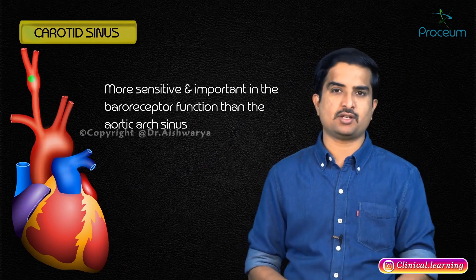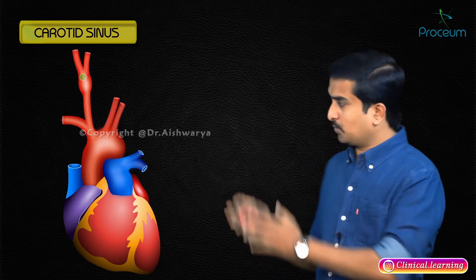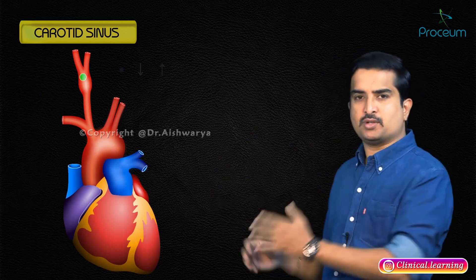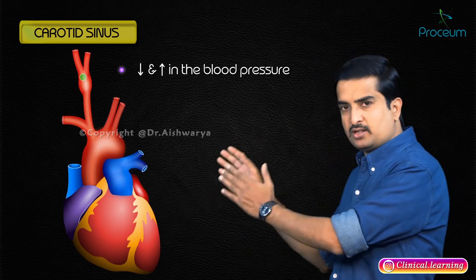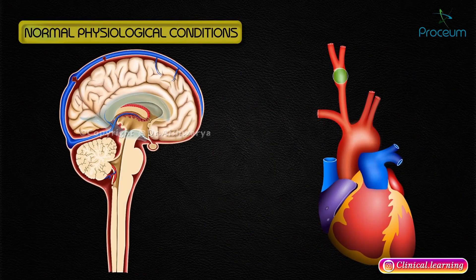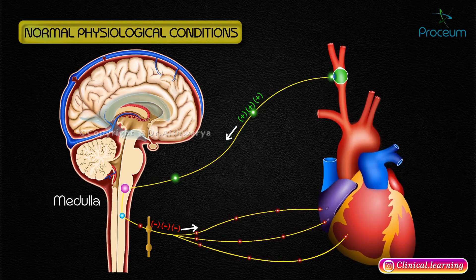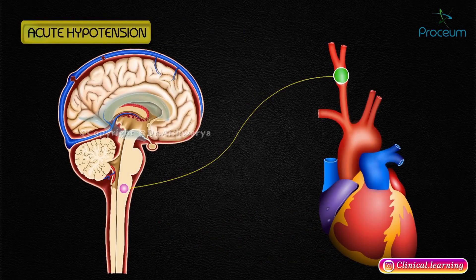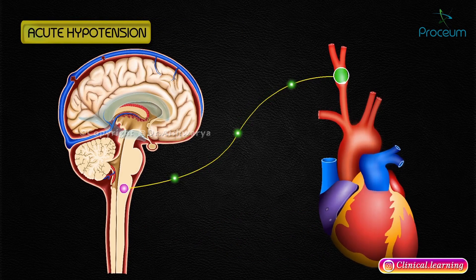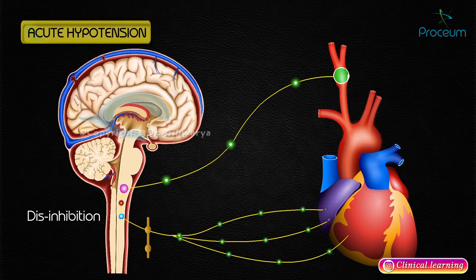The carotid sinus is more sensitive and important in baroreceptor function than the aortic arch sinus. It responds to both decreases and increases in blood pressure. Under normal physiological conditions, baroreceptor firing exerts a tonic inhibitory influence on the sympathetic outflow from the medulla. Therefore, acute hypotension results in a disinhibition of sympathetic activity within the medulla.